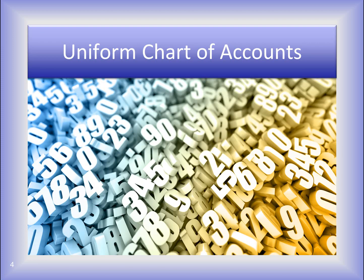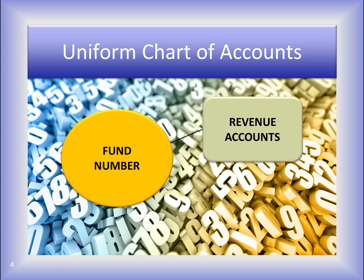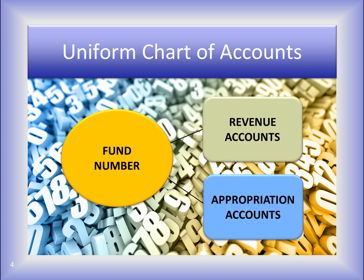The Uniform Chart of Accounts is made up of Fund Numbers, Revenue Accounts, and Appropriation Accounts. The fund number establishes the fund as a specific type. The revenue and appropriation numbers used for each fund maintain the budget and filter data to the proper place on the annual financial report. The first layer of understanding the Chart of Accounts has to be making a selection from the correct type.